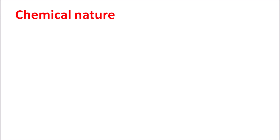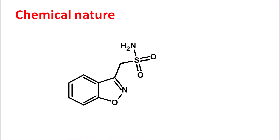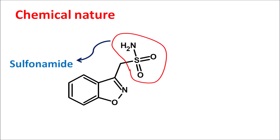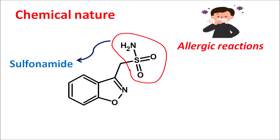First of all, let us see the chemical nature of this drug. This is the structure of zonisamide. Here we can observe one moiety — this is nothing but sulfonamide. So zonisamide is a sulfonamide derivative. Because of the sulfonamide moiety within the structure, this drug can produce some allergic reactions, which are commonly observed with sulfonamides. Many sulfonamides are used as antibacterial agents which can produce allergic and hypersensitive reactions. Similarly, zonisamide can also show some allergic reactions.